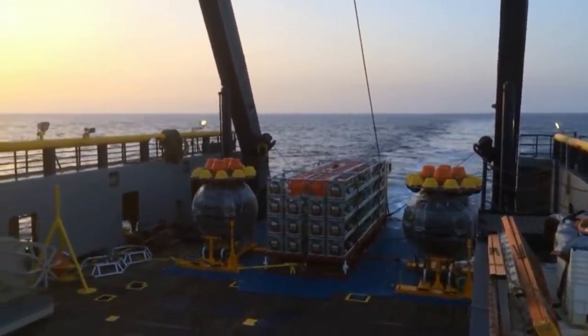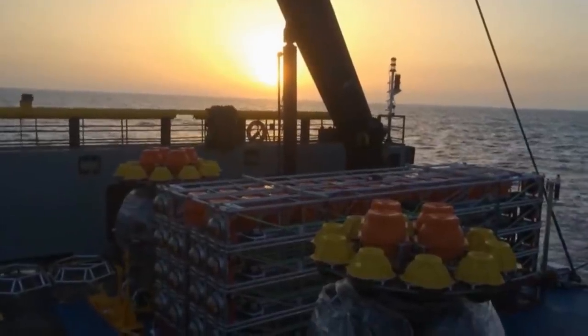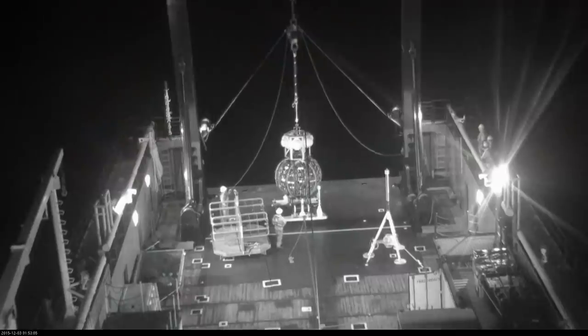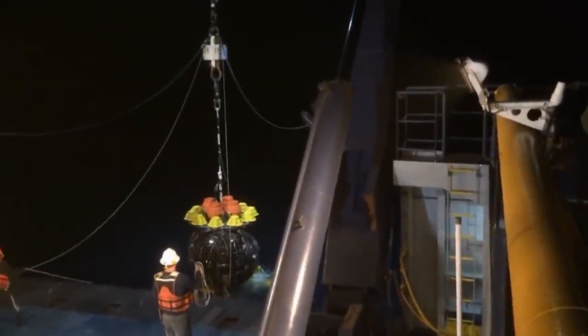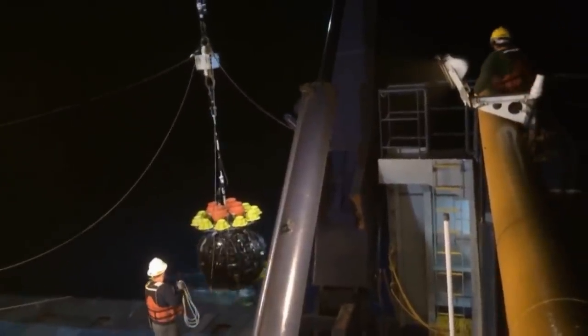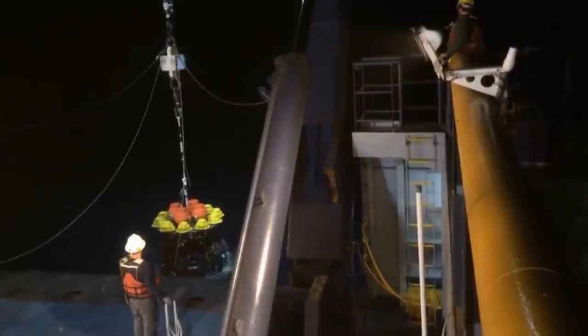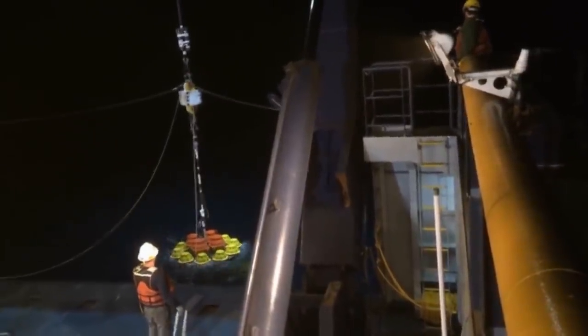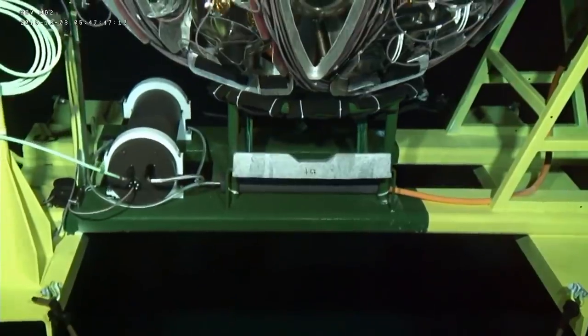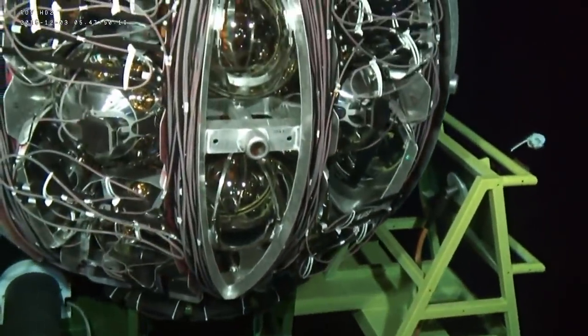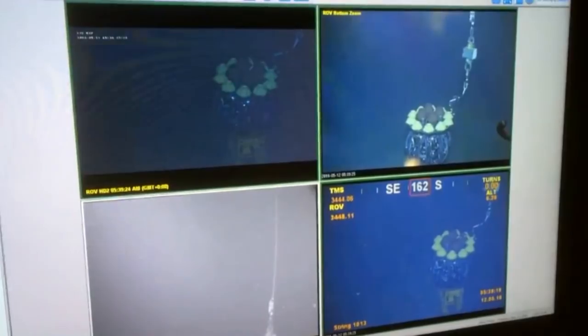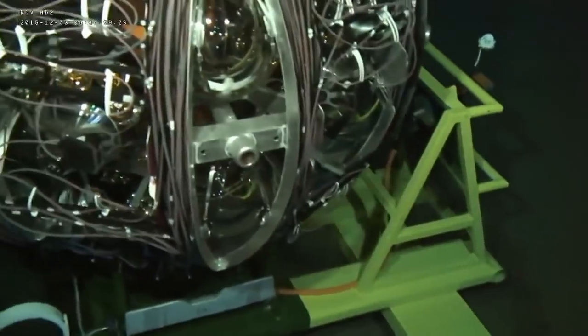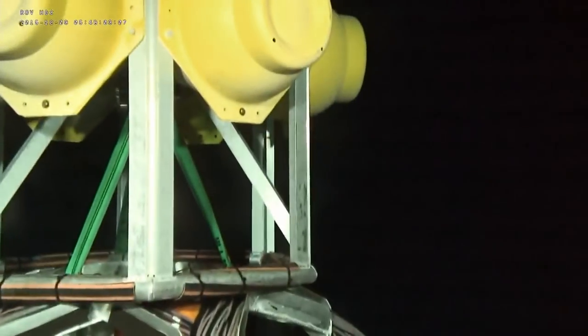A research vessel transports it 40 kilometers offshore. Tonight, the first KM3NET string is due to reach the bottom of the Mediterranean at a depth of three and a half thousand meters. Slowly, at a speed of 12 meters per minute, the anchor and sensors sink onto the seabed. They are accompanied by submersible robots steered by engineers on board the research vessel.